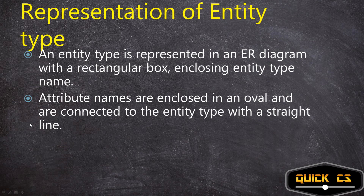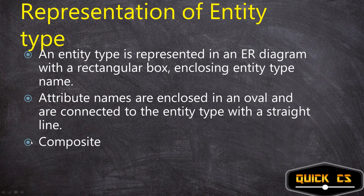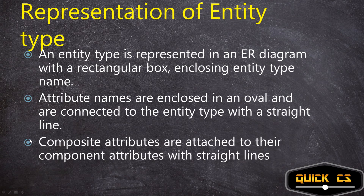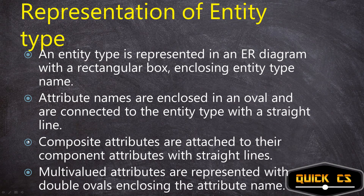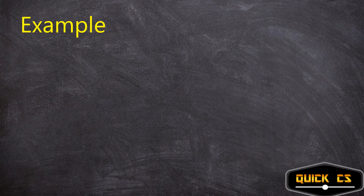Attribute names are enclosed in ovals and connected to the entity type with a straight line. Now let's look at an example of how different attributes are represented in an ER diagram. We represent the entity type 'Car' with a rectangle, writing the entity type name 'Car' inside it. Then we have attributes: Vehicle ID, Registration, Year, and Color.